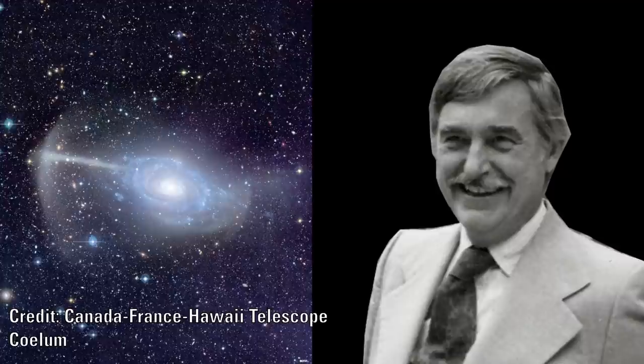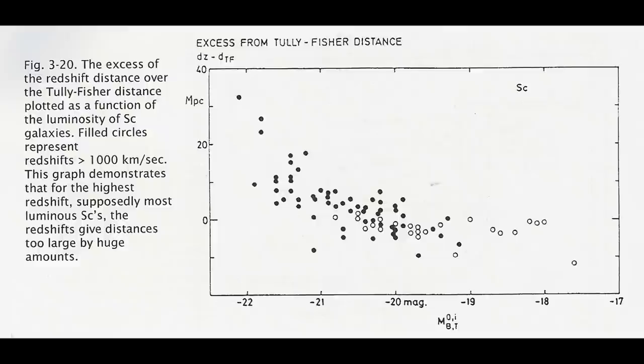Halton Arp was an astronomer who spent many years cataloguing quasars and galaxies. He published many books on his finds and showed clear evidence of a discrepancy between the measured distance using the Tully-Fisher measure and the associated redshift of these galaxies.